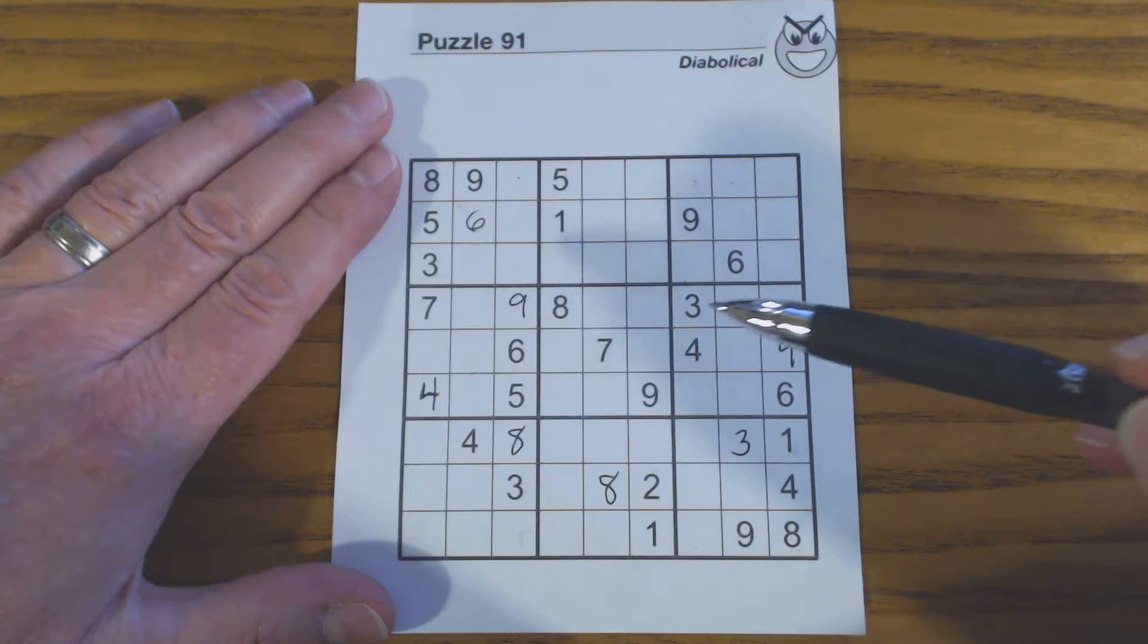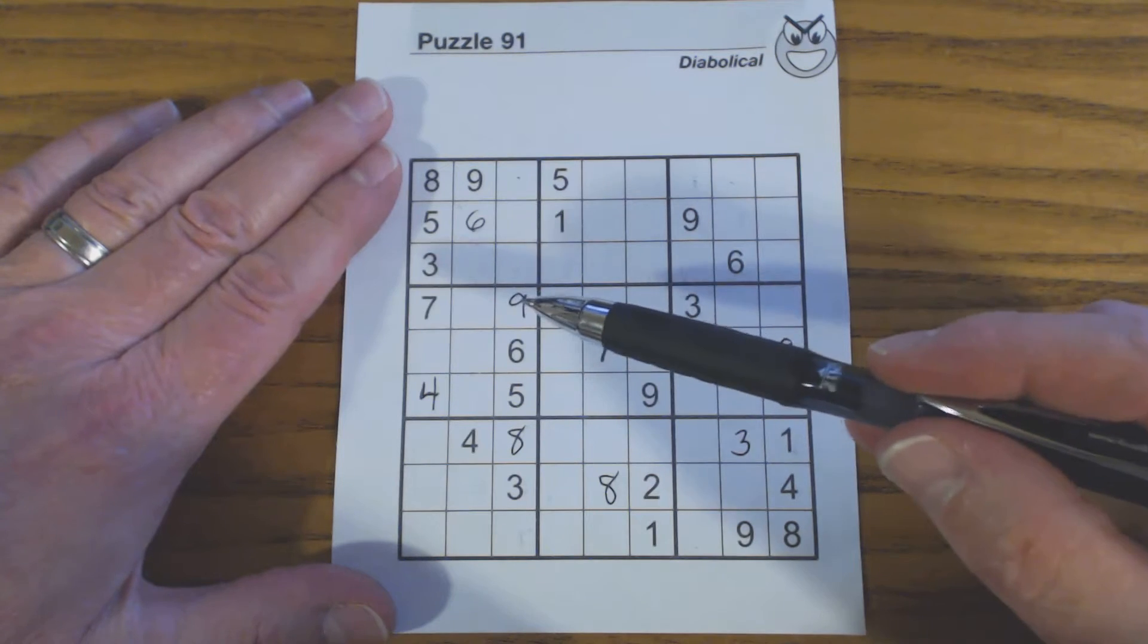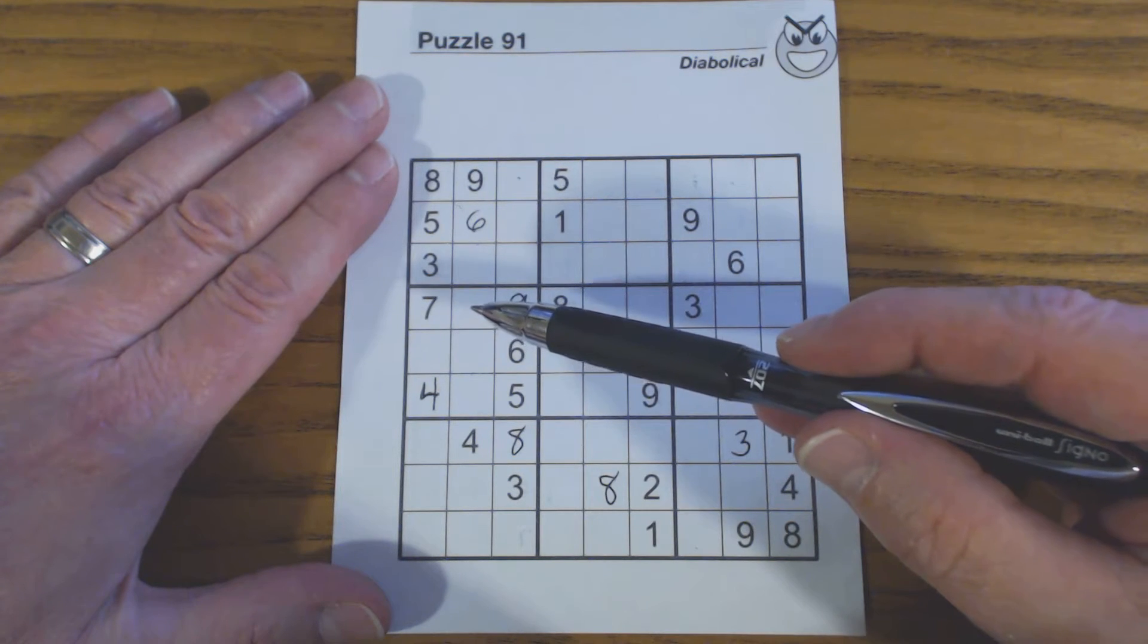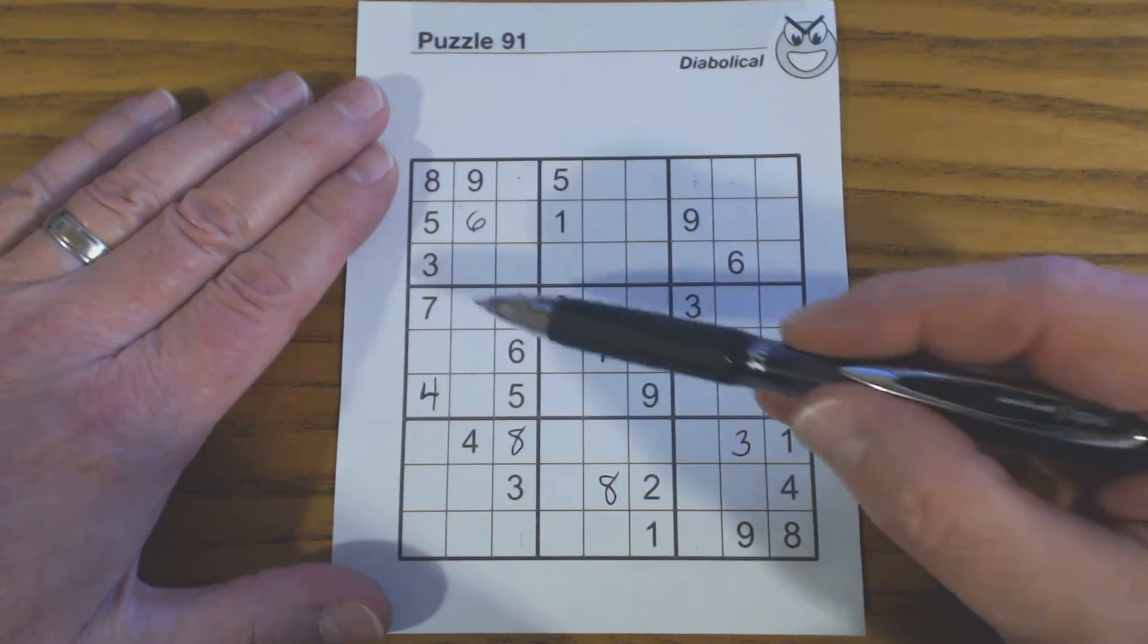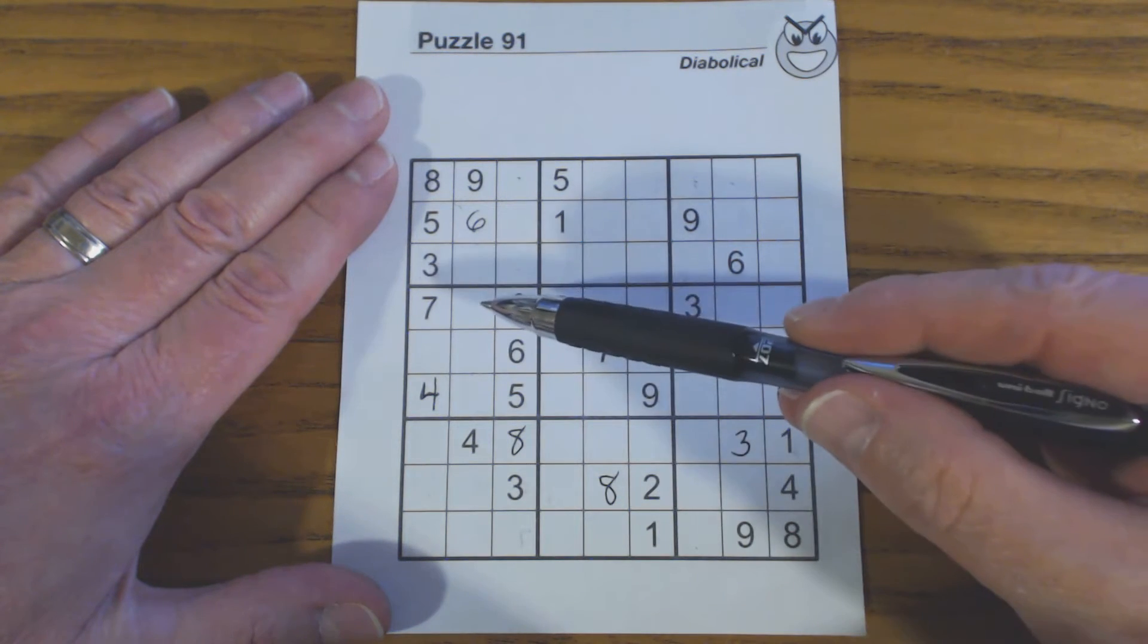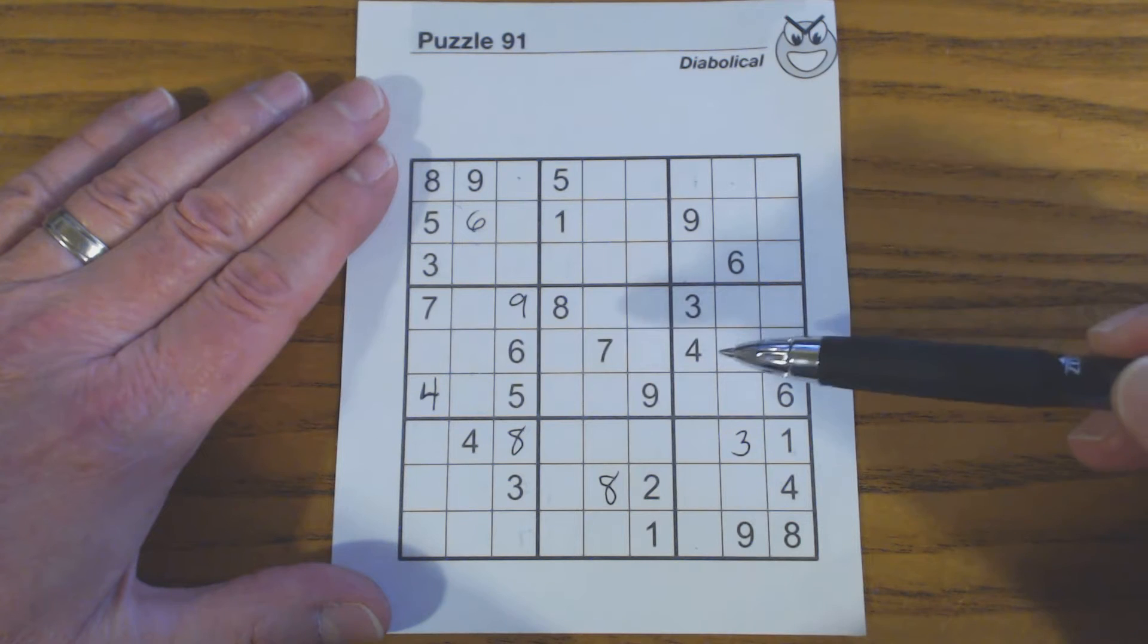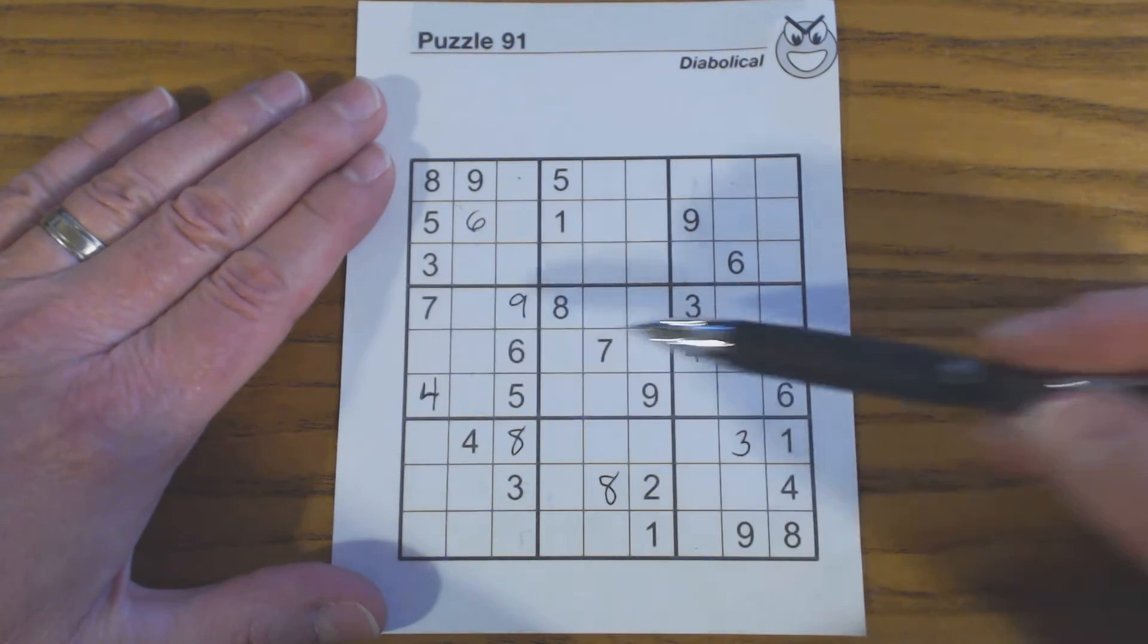First of all in this first row we've got 1, 2, 3, 4, 5, 6, 7, 8, 9. So the missing numbers are 1, 2, 4, 5, 6. Here we've got 1, 2, 4, 5, 6, so that's a 1, 2. Here 1, 2, 4, 5, 6, so 1, 2, 5. Okay, let's go to the next row.